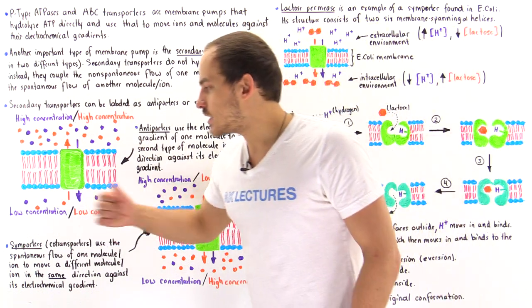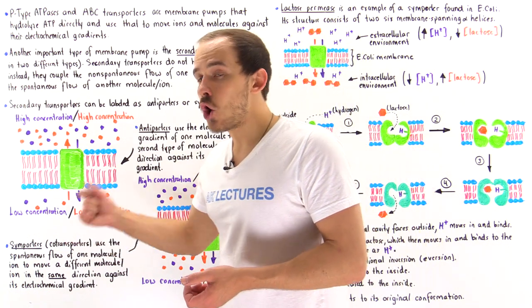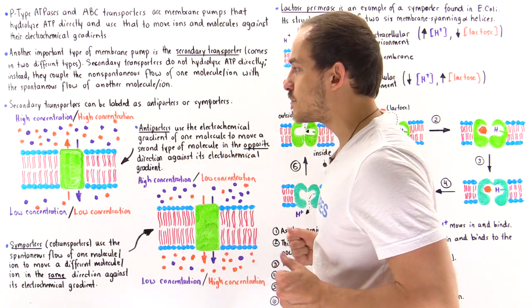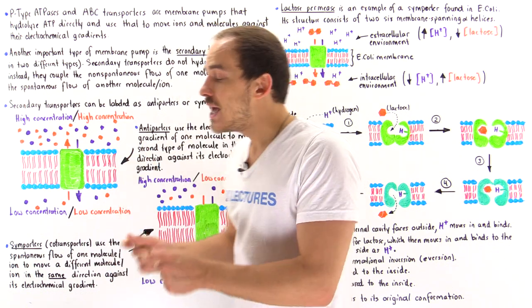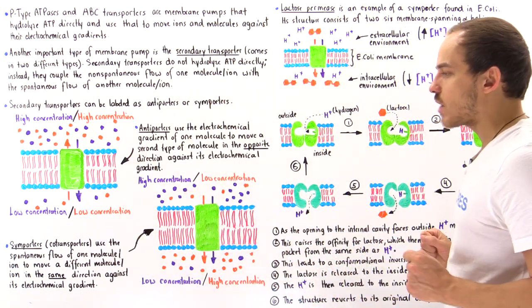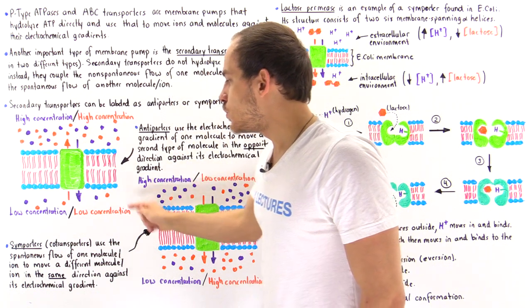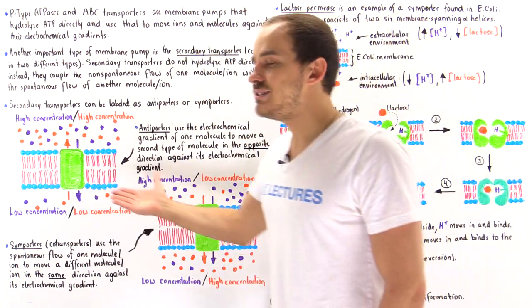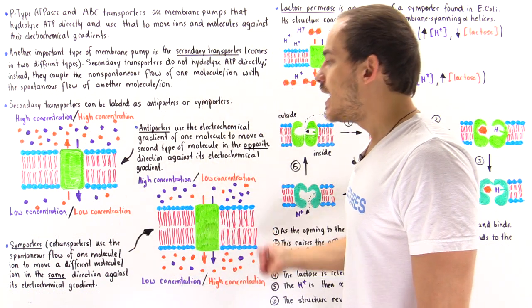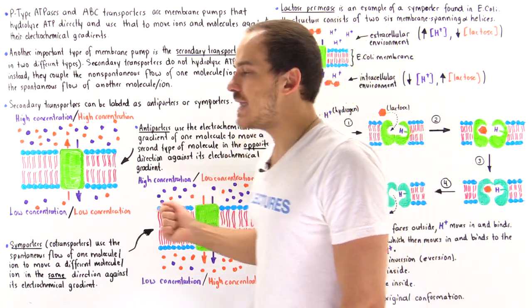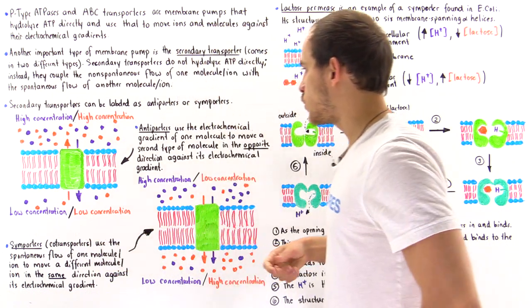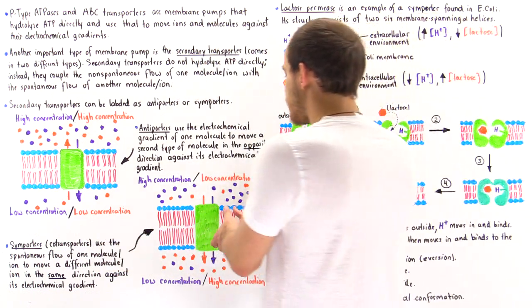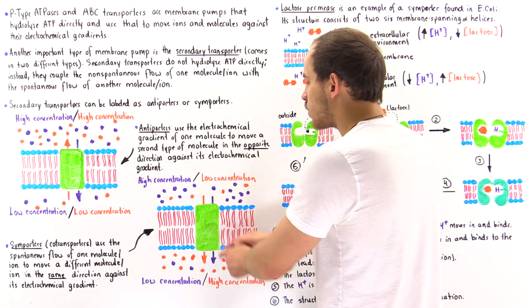Now let's look at symporters. Symporters, also known as co-transporters, are basically the same type of transmembrane protein, except they move in the same direction. Symporters use the spontaneous flow of one molecule or ion to move a different molecule or ion in the same direction, against its electrochemical gradient. Let's take a look at this diagram.